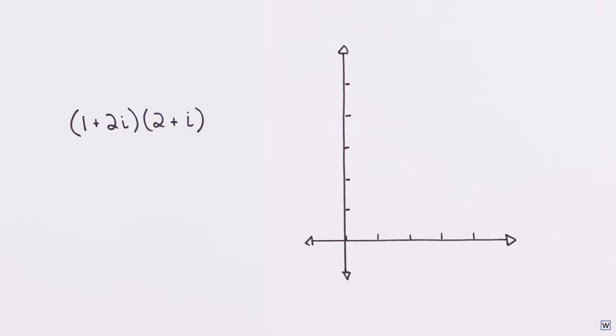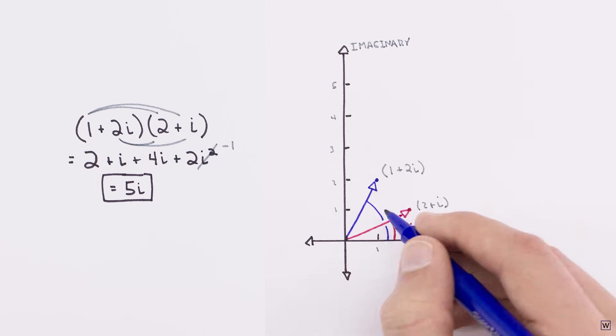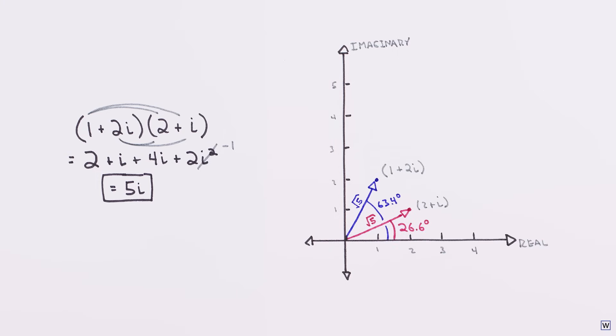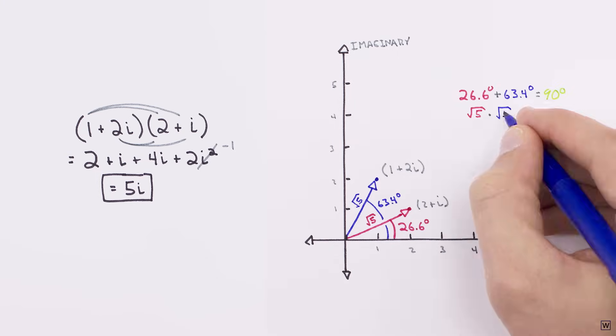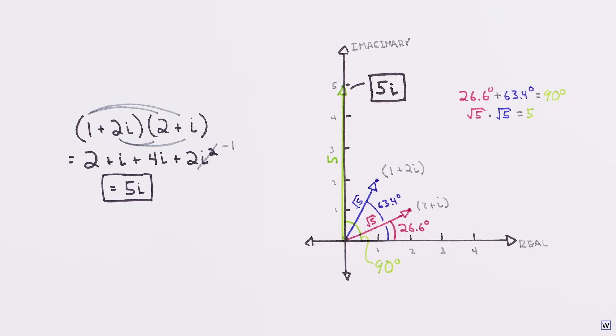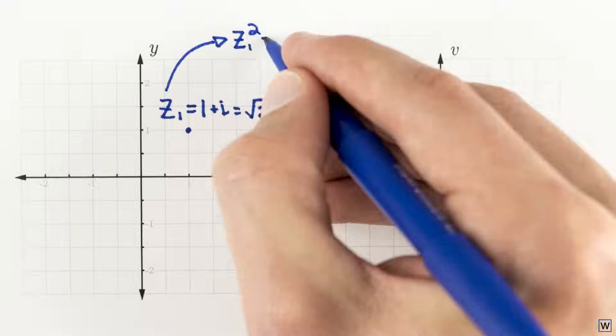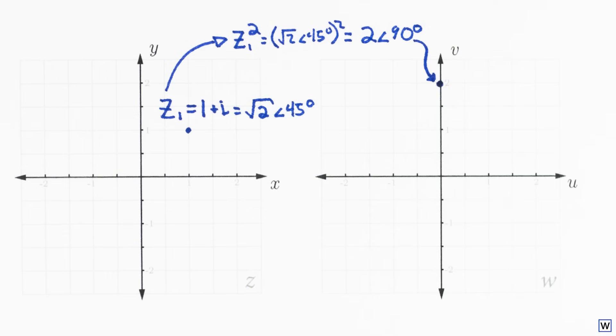Back in part 7, we saw that one way to interpret complex multiplication is as a rotation and scaling of our input values. When we multiply two complex numbers together, their magnitudes multiply and their angles add. So the z² part of our function should take our complex number z, square its distance to the origin, and double its angle.